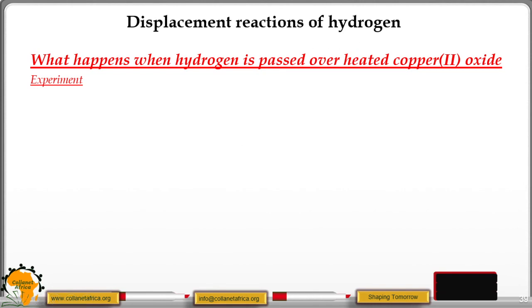the burning of hydrogen in air to give water, and also the uses of hydrogen. First we are going to look at the experiment of what happens when hydrogen is passed over heated copper oxide.